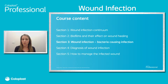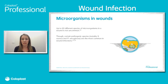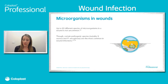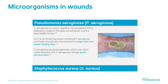We'll now look at wound infection and some of the different bacteria causing infection. There are a whole multitude of microorganisms found in wounds — up to potentially 60 different species isn't uncommon — but two types seen quite commonly in practice are Pseudomonas and Staphylococcus. Pseudomonas often has a green tint, and 52.2% of chronic leg ulcers contain Pseudomonas; those wounds are characterised by larger wound sizes, slower healing rates, and that green discolouration.